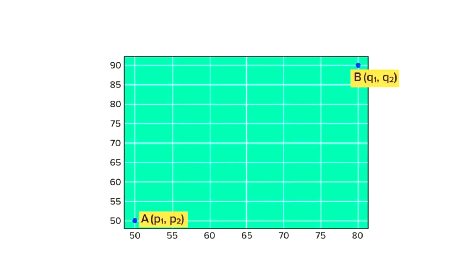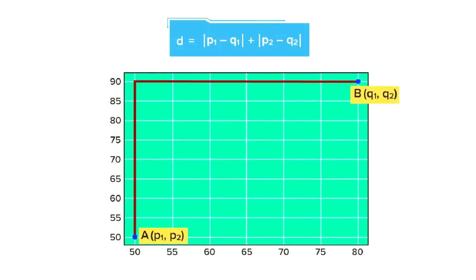Now again, consider two points but this time in two dimensions. In this case, what do you think we will do? We will first calculate the absolute difference along the horizontal axis, then absolute distance along the vertical axis, and then we will simply add them up.